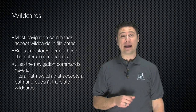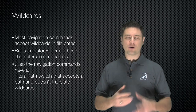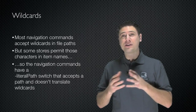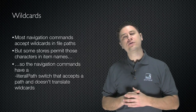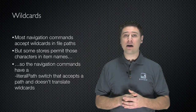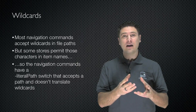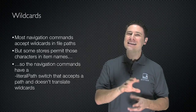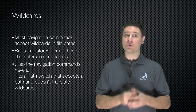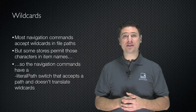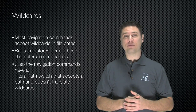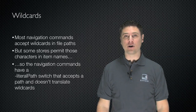Most of the navigation commands accept wildcards in their file paths — that's a question mark or a star — and you're probably already used to using those. But the problem is that some stores, like the registry, allow those characters in file names. The reason we can use question mark and star as wildcards at the file system is because file names aren't allowed to contain those characters, so the OS can always tell a wildcard. That's not the case in some other types of storage. So most of these commands also have a -LiteralPath switch. When you're using the -LiteralPath switch, it doesn't try to translate wildcards — it just treats them as literal characters. That way you can access things like registry keys which might have a question mark in their name, and not have that question mark be treated as a wildcard.